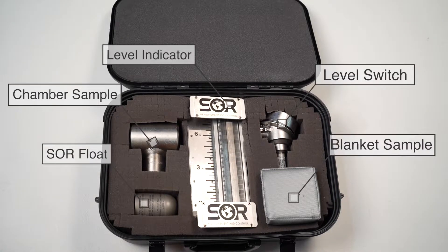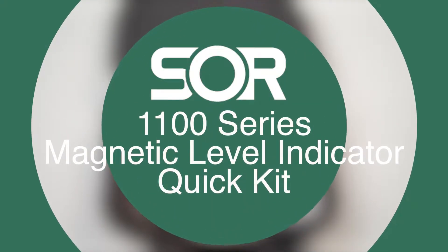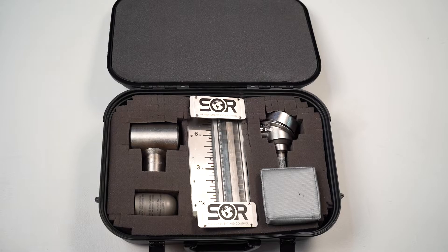Piece by piece. This is a demo of the SOR 1100 Series Magnetic Level Indicator Quick Kit. You'll learn it in a snap.